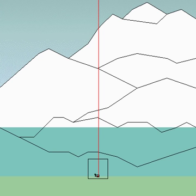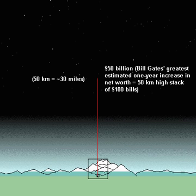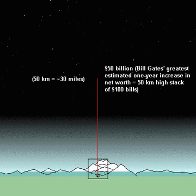We come now to the top of the stratosphere and the top of our graph. At the 50-kilometer mark, we see Bill Gates' greatest increase in net worth in one year. His overall wealth rises and falls with the stock market, but was reputed to be about $100 billion at one point. Other families have comparable wealth — the Walmart fortune, for instance, is shared by several members of the Walton family, but their total wealth is even greater than the Microsoft fortune.